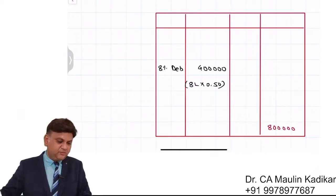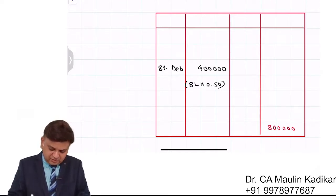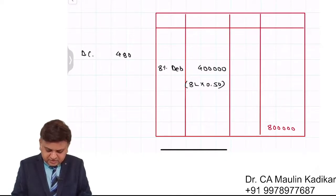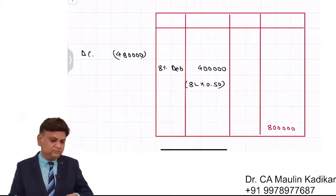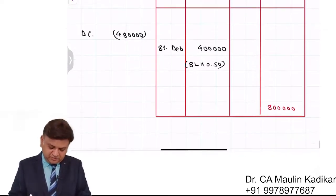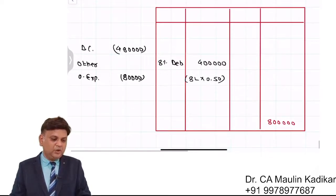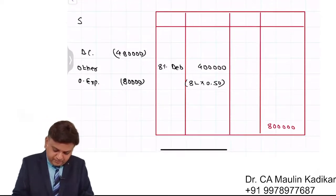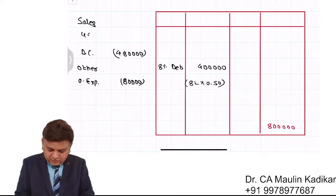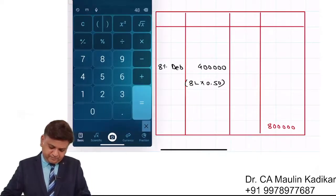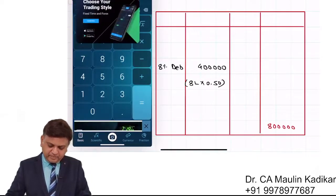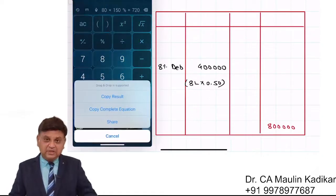The direct cost for the year is estimated at Rs 4 lakhs 80,000. Other operating expenses are Rs 80,000. Goods will be sold to customers at 150% of the direct cost. So sales equals Rs 4 lakhs 80,000 into 150%, which comes to Rs 7 lakhs 20,000.